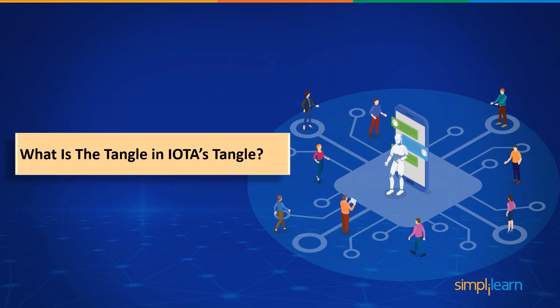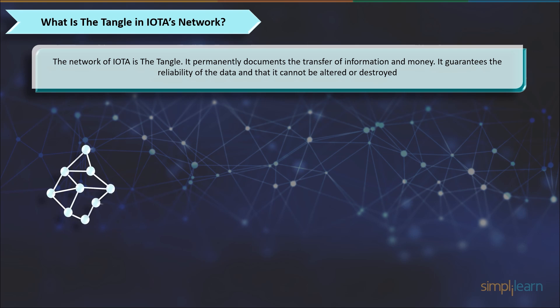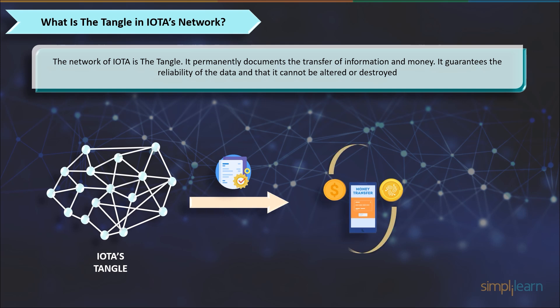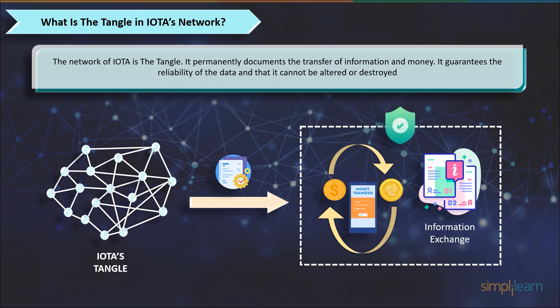But this raises a question: what does the Tangle stand for in IOTA's Tangle? Well, IOTA's network is called the Tangle. It permanently documents the data and value exchange. It guarantees that the data is reliable and cannot be changed or erased. It's kind of a digital ledger that is replicated on all nodes in an IOTA network. All the data in the Tangle is stored in objects called transactions, and when a transaction is attached to the Tangle, it cannot be changed and is immutable. In short, it contains the current transaction history and is the single source of truth.